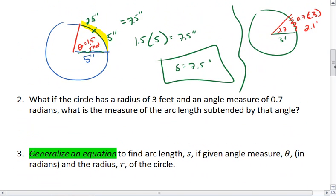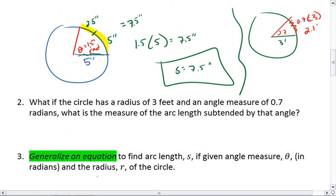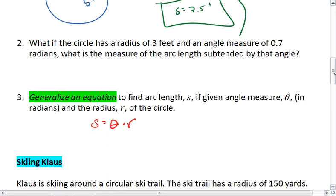What we see in both of these equations is that arc length is determined by multiplying the angle measure in radians by the radius length. It's very important though that theta be in radians. So we get s equals theta times r. This is something you want to know—this is an important equation, and it should make sense to you as well.